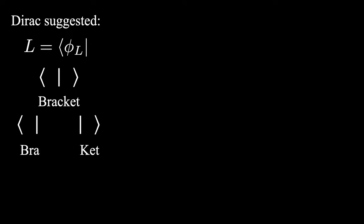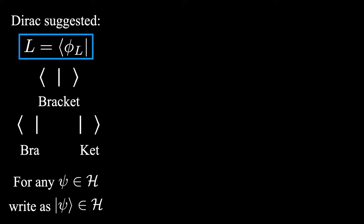So at this stage in the development of the notation, we are saying that a linear functional L is equal to the bra phi sub L. And this is totally legitimate because of the Riesz Representation Theorem. The next stage is that for any function psi that lives in the Hilbert space, instead of just writing it as psi, we will dress it up with the notation of being a ket.